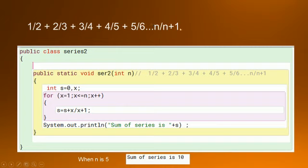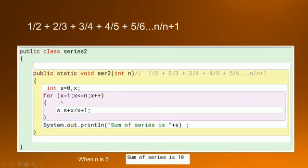In the examination sometimes the pattern n divided by n plus 1 is not given — you have to judge yourself what kind of series it makes. Once you have figured it out, in this case the numerator is n and the denominator is n plus 1. So we will start from 1 and go till n. If the value of n is 5, that means we have to go till 5 divided by 6. So s is equal to s plus x divided by x plus 1.